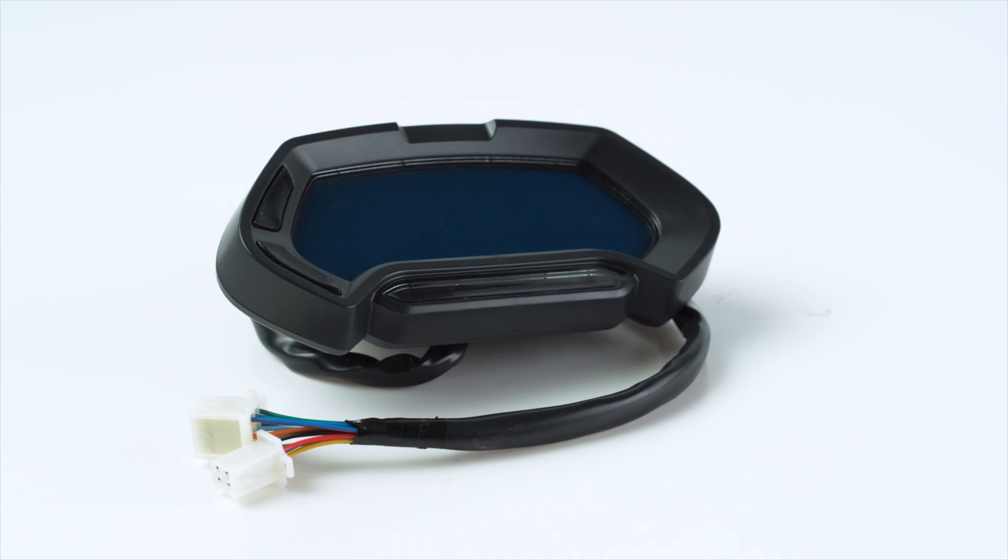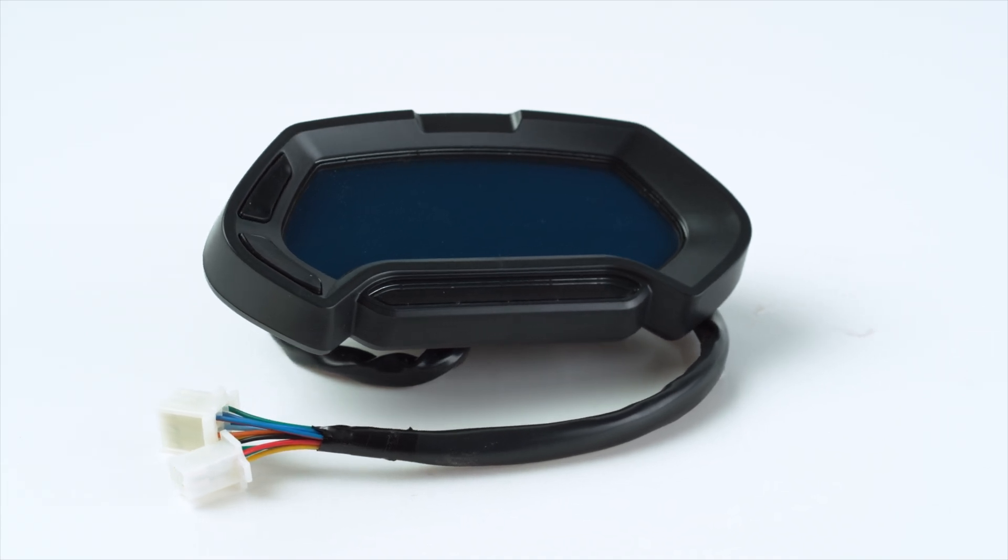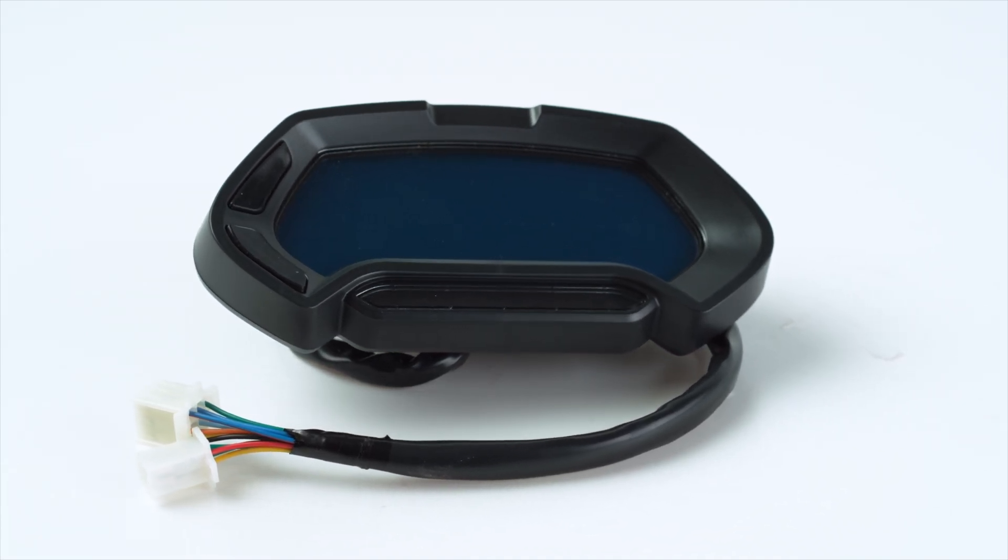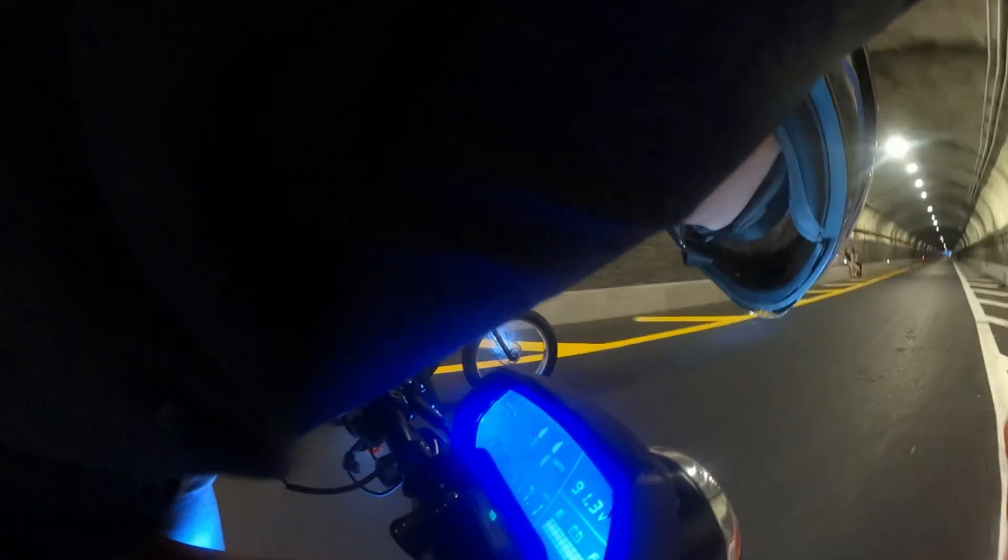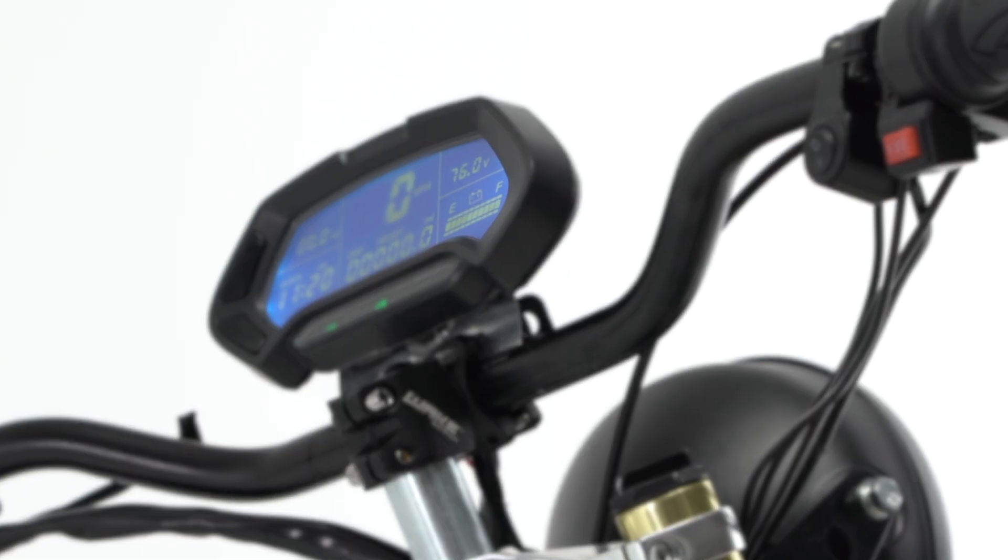The next complicated electronic component to talk about is our display. This display has a ton of wires going into it. Basically all of those wires are different inputs for things that this can display. It'll connect to that hall wire to output our speed. It connects to our DC-DC to get 12 volts. It connects to our battery voltage as well so it can read the battery voltage out.